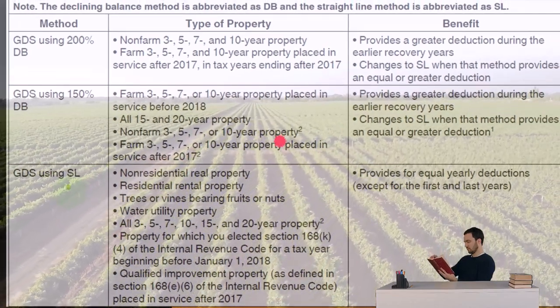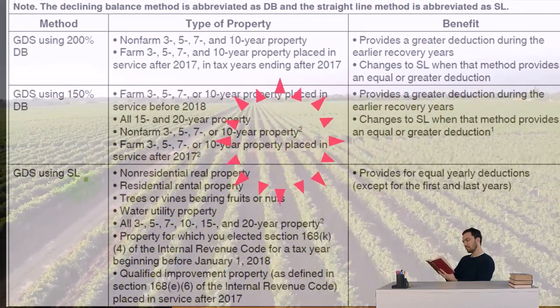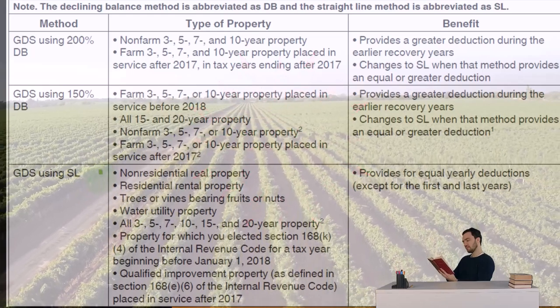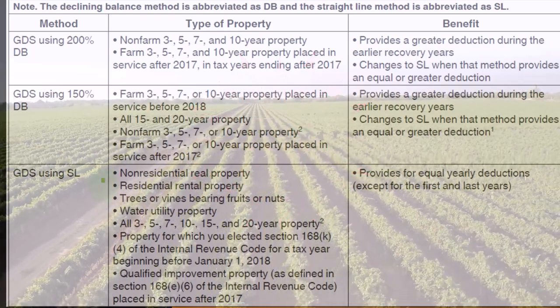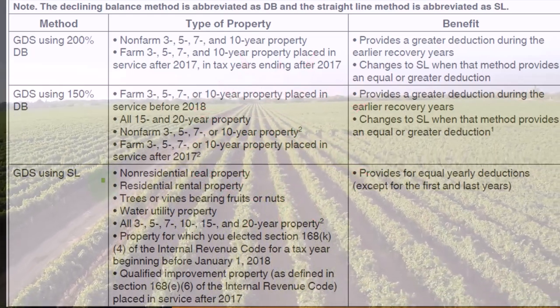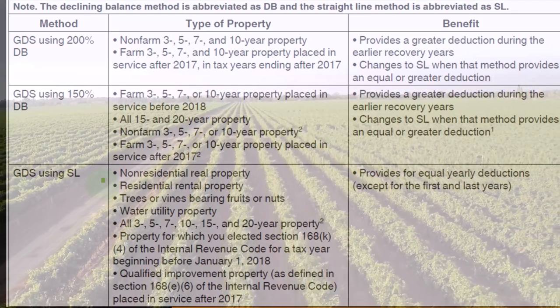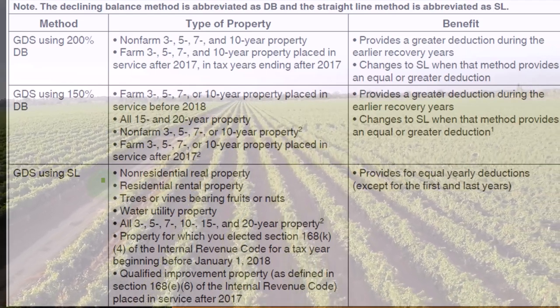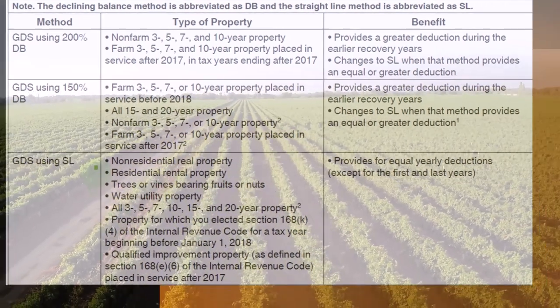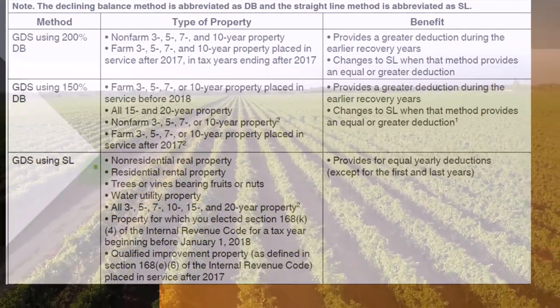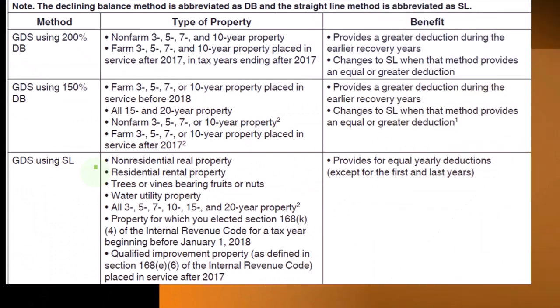And then you've got the GDS using straight line — non-residential rental property and residential rental property. Those large items, real estate in essence, being depreciated over long periods of time, not getting the benefit of the double declining, wanting instead that straight line method.